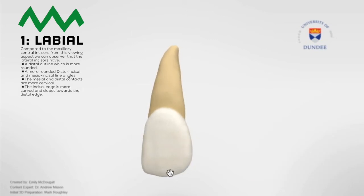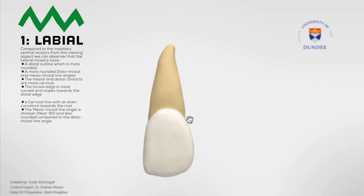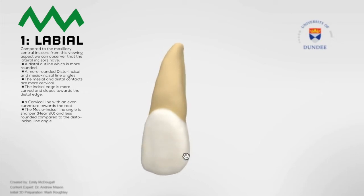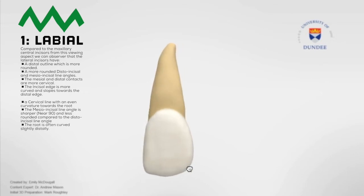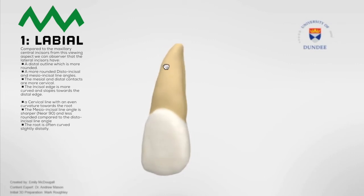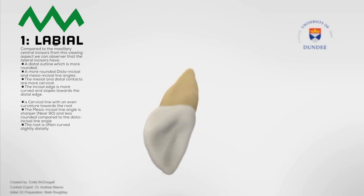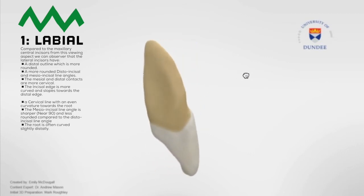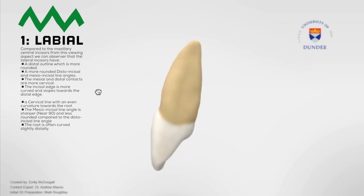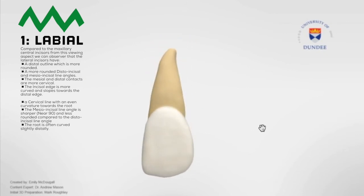The incisal edge is more curved and slopes towards the distal edge. From this view, we can also observe a cervical line with an even curvature towards the root. The mesial incisor line angle is sharper, nearly 90 degrees, and less rounded compared to the distal incisor line angle. The root is often curved slightly distally. From here, you should be able to tell which maxillary lateral incisor is being used in this video — have a guess in the comments below whether it's the left or the right.